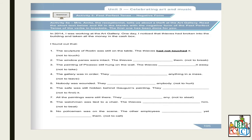Let us read the questions first, then we are going to see some examples. Mrs. Anita, the receptionist, tells us about a theft at the old gallery. Read the short text below and fill in the blanks with the negative form of the past perfect tense of the verbs in brackets. The first one has been done for you. We will start reading together.